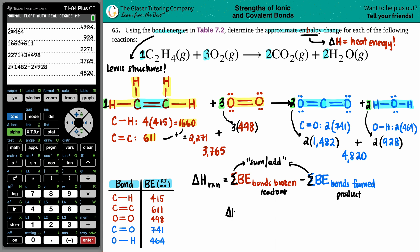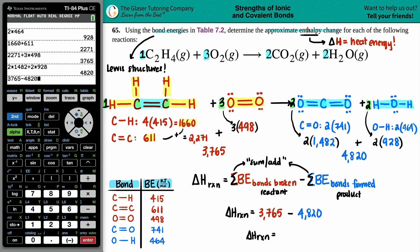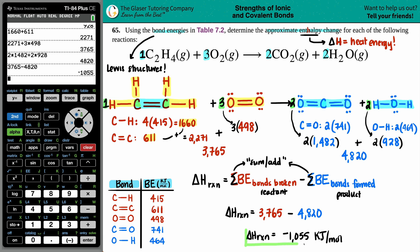Now we plug in: ΔH = 3765 − 4820 = −1055 kJ/mol. This was a combustion reaction — combustion produces fire — so it makes sense that it's negative, meaning we're releasing 1055 kJ/mol of heat. It's exothermic.